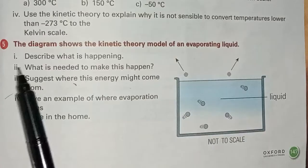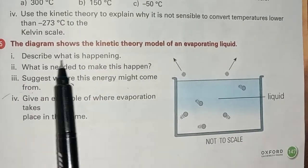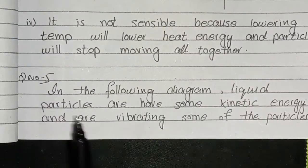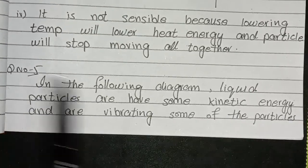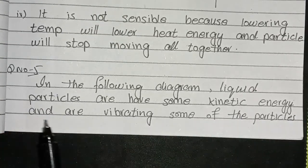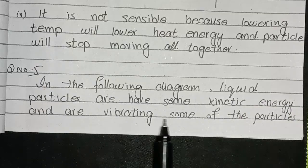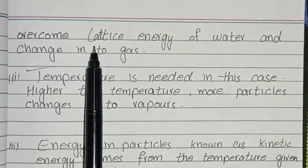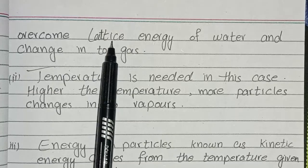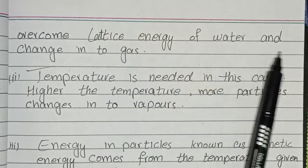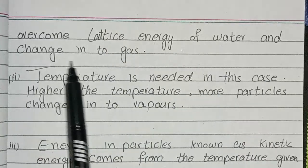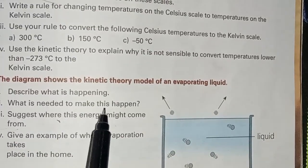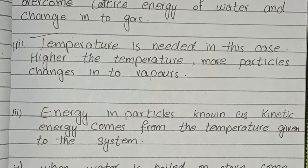Question number 5: the diagram shows the kinetic theory model of an evaporating liquid. Describe what is happening in the diagram: liquid particles have some kinetic energy and are vibrating. Some of the particles overcome the lattice energy of water and change into gas.